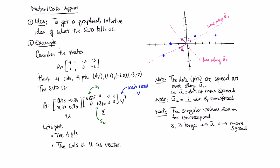Again, we need to formalize all this. S2 is smaller. That corresponds to U2, which is less spread.